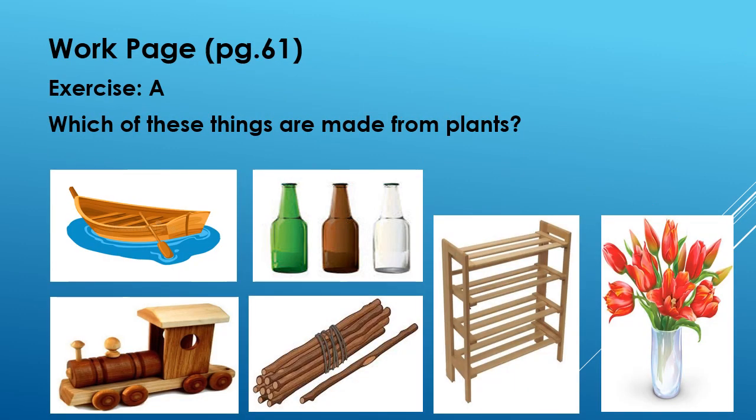Now open page 61 of your social studies book. We are going to do work page exercise A. Tell me which of these things are made from plants? Any guesses? The boat, sticks, and the wooden rack are made from plants.